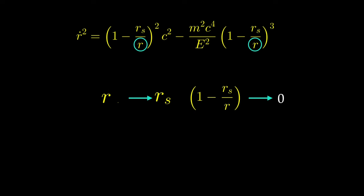Does that mean nothing ever enters a black hole? No. We just cannot observe anything entering a black hole. The spaceship itself experiences the crossing of the event horizon — it's just that we as the observer are not able to see that.